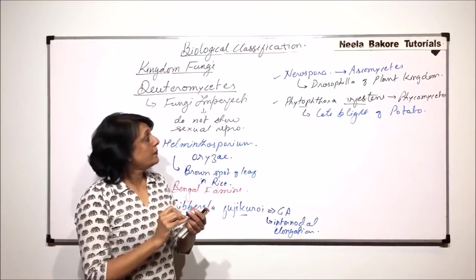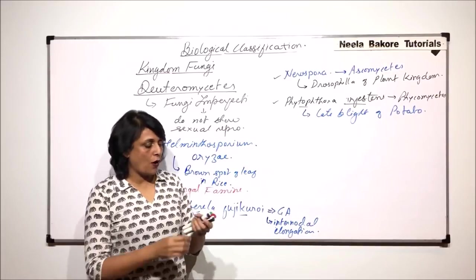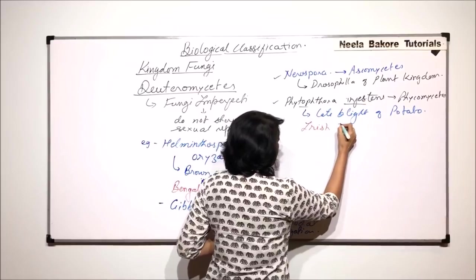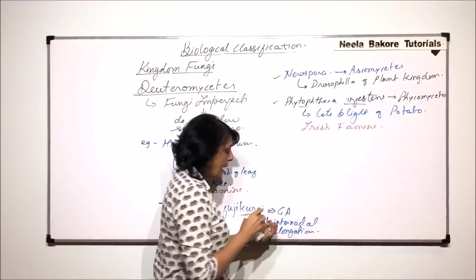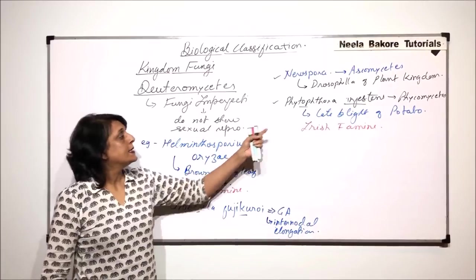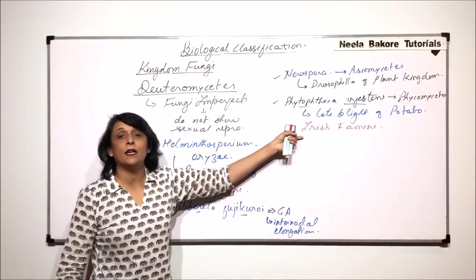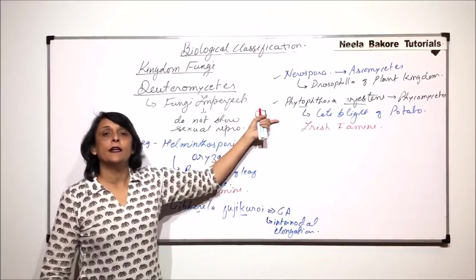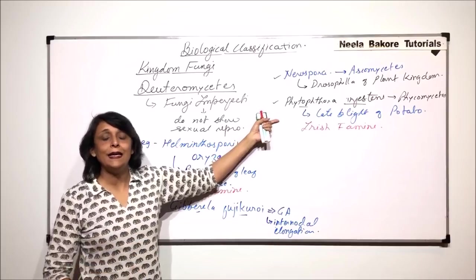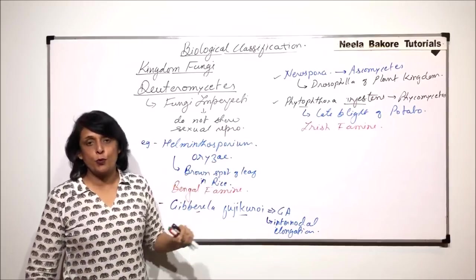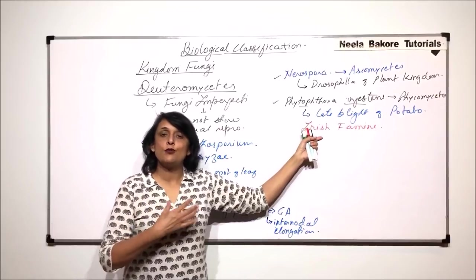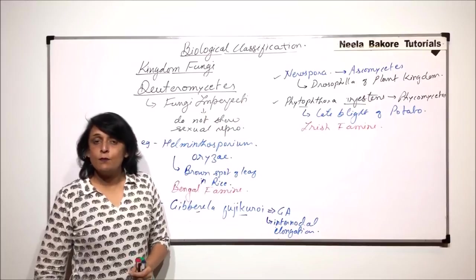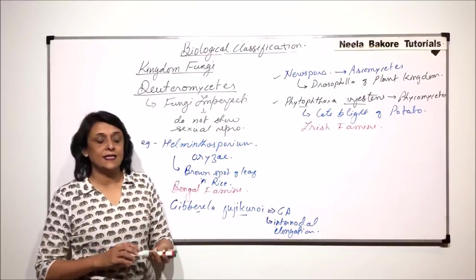This fungus was responsible for a condition which we now call Irish Famine. What happened in Bengal with rice, the same thing happened in Ireland with potato crop. There the staple food is potato, and this fungus infected all the potato crops so badly that there was absolutely no production. That condition or situation was termed as Irish Famine. This is again a very important member belonging to Phycomycetes group.